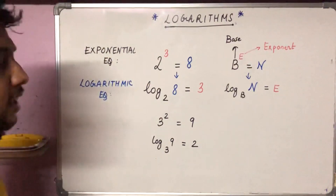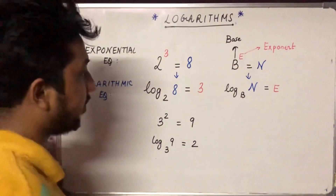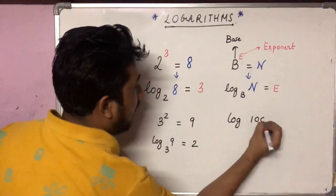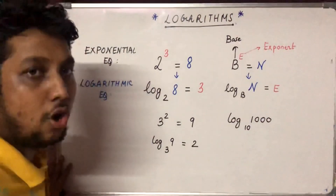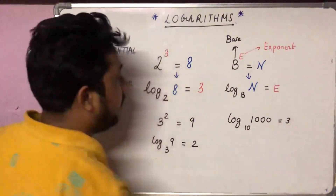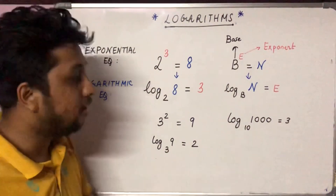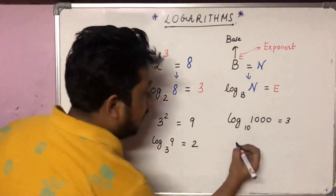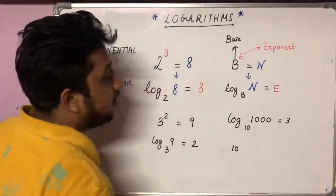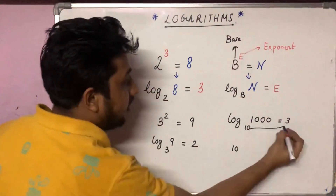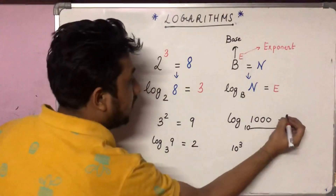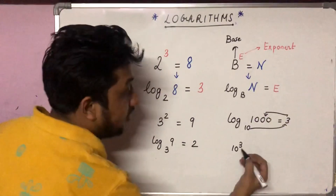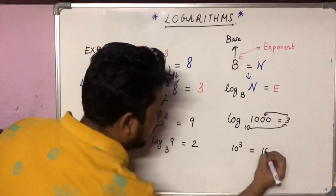Now let's convert a logarithmic equation into an exponential equation. Say log of one thousand to the base ten equals three. This is a logarithmic equation. Converting it: the base is ten, the exponent is three, so ten to the power three equals one thousand.